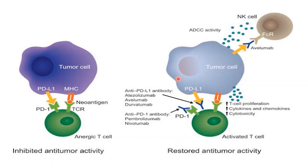Another example is the monoclonal antibody obinutuzumab. This monoclonal antibody binds to one of the receptors of the tumor cell, and the antibody can also bind with the natural killer cell. The natural killer cell binds with the antibody and destroys the tumor cell.